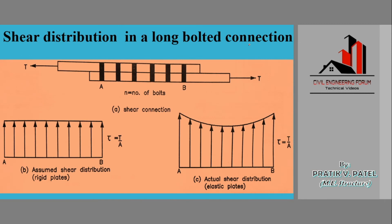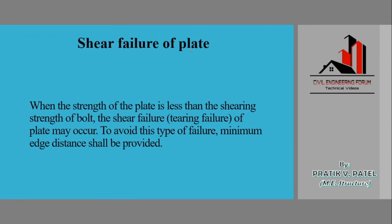In a long bolted connection, the assumed shear force distribution treats all bolts as taking equal shear force, but the actual shear distribution shows more force at the ends (points A and B) and less at the center. Since we assume equal distribution, we design all bolts to the same strength as the end bolts, which carry the highest actual shear force.